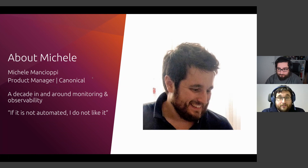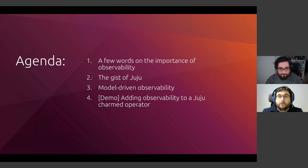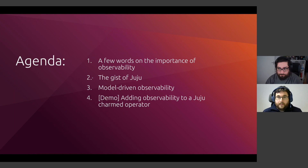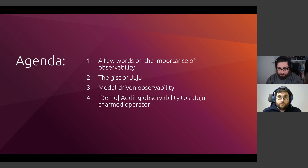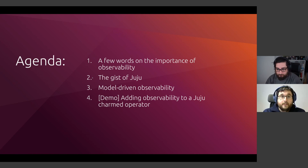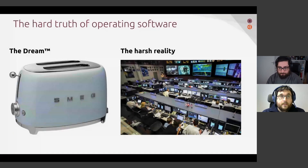I have a thing for automation — if it's not automated, I do not like it. Today we are going to talk about why observability is important, then briefly about Juju at a high level. Juju is a toolkit that allows you to model, deploy, and operate software intuitively. We'll apply Juju concepts to observability through model-driven observability, then demonstrate a charmed operator for a Spring Boot application integrating with Loki, Prometheus, and other monitoring capabilities.